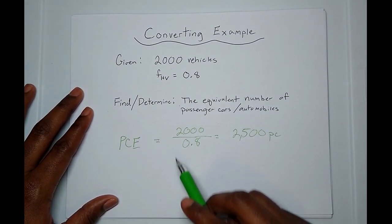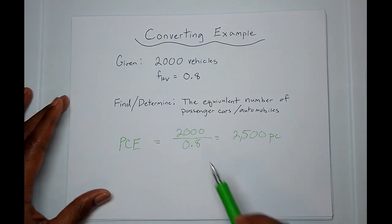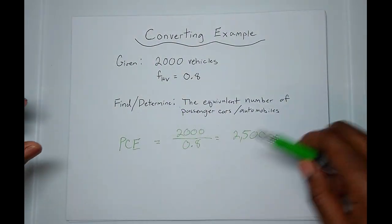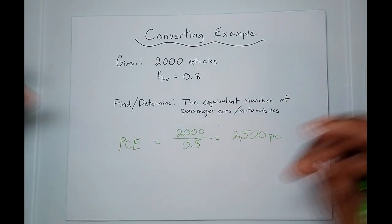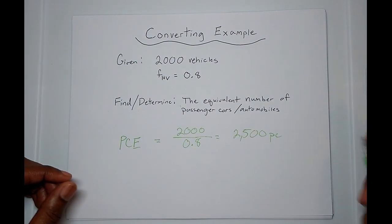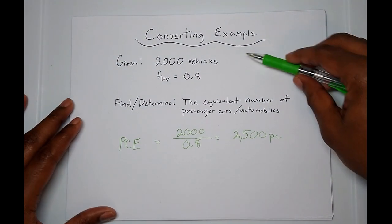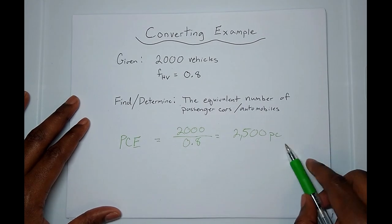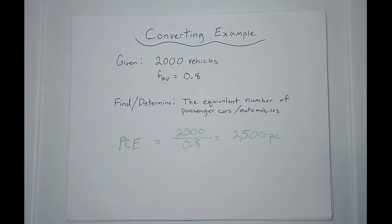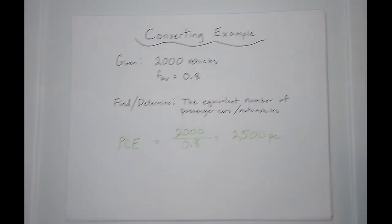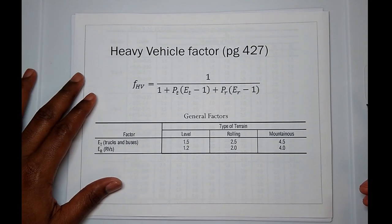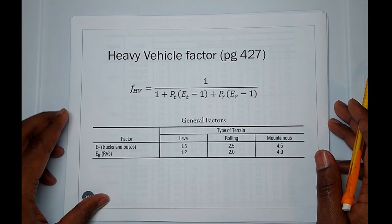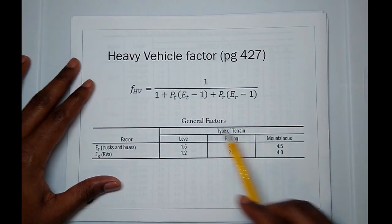What this is saying is that those 2,000 vehicles, if we convert them all into being represented as passenger cars, it's equivalent to 2,500 passenger cars on that road. A natural question would be: where do you get that heavy vehicle factor? How do you calculate it? This is the equation, and I'll show you what those variables are.